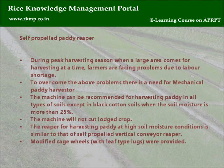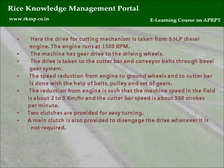Self-propelled paddy reaper: During peak harvesting season, when a large area comes for harvesting at a time, farmers face problems due to labor shortage. To overcome this, there is a need for a mechanical paddy harvester. The machine can be recommended for harvesting paddy in all types of soils, except black cotton soils, when the soil moisture is more than 25%. The machine will not cut lodged crop. The reaper for high soil moisture conditions is similar to a self-propelled vertical conveyor reaper, with modified cage wheels with leaf-type lugs. The drive for the cutting mechanism is taken from a 5 HP diesel engine running at 1,500 RPM.